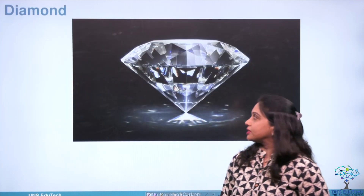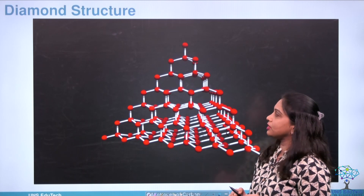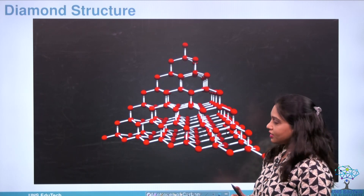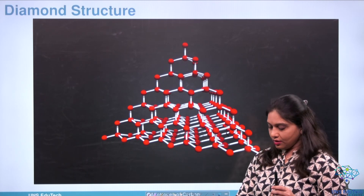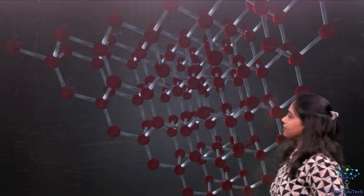Let us start with diamond. Here you can see a real picture of a diamond, which appears very bright and very shiny. Let me show you the 3D picture of the diamond — here is the 3D picture of a diamond.